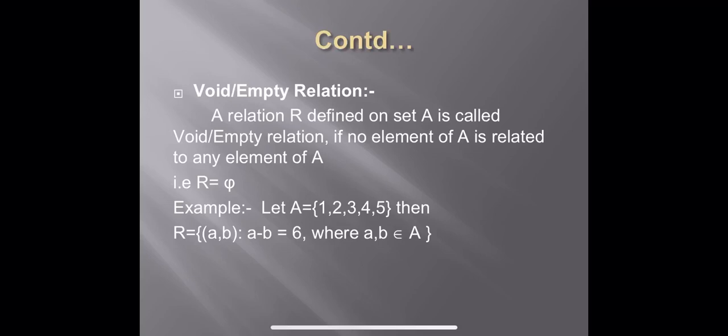Can you find any ordered pair where the difference equals 6? Let us check: difference of 1 and 2 is not equal to 6, difference of 1 and 3 is not equal to 6, difference of 1 and 4 is not equal to 6, difference of 1 and 5 is not equal to 6. In the same way you can check for other elements of the set.